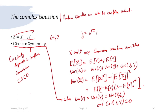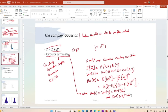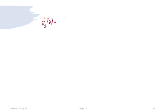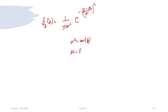A circularly symmetric complex Gaussian has x and y as independent Gaussian random variables. The probability density function of a complex Gaussian is f_Z(z) = (1/(πσ²)) exp(−|z − μ|²/σ²), where σ² = Var(z) and μ = E[z], and everything here is complex.